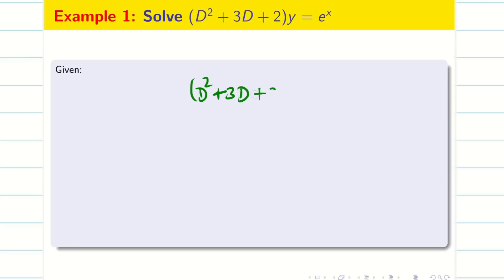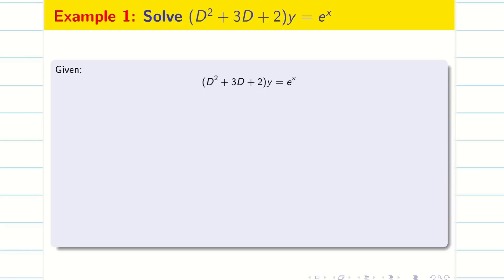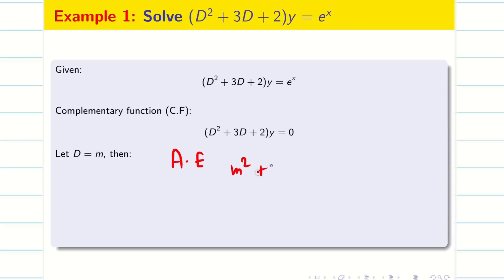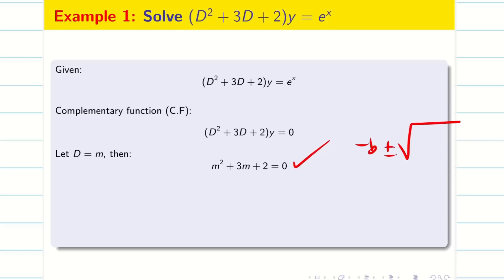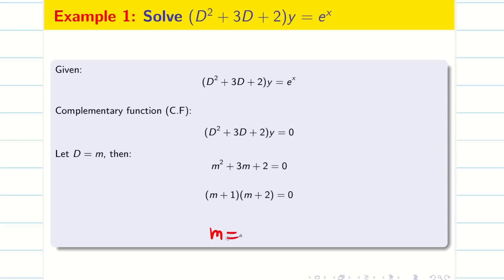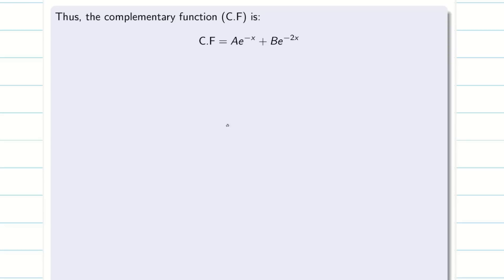Problem 1: Solve (D² + 3D + 2)y = e^x. First, let us find CF. Make the equation homogeneous by setting the RHS to zero, then substitute D = m to get the auxiliary equation m² + 3m + 2 = 0. The roots are m = −1, −2. Therefore the complementary function is CF = Ae^(−x) + Be^(−2x).